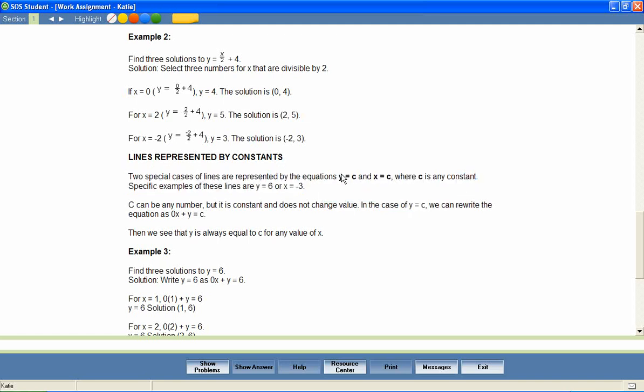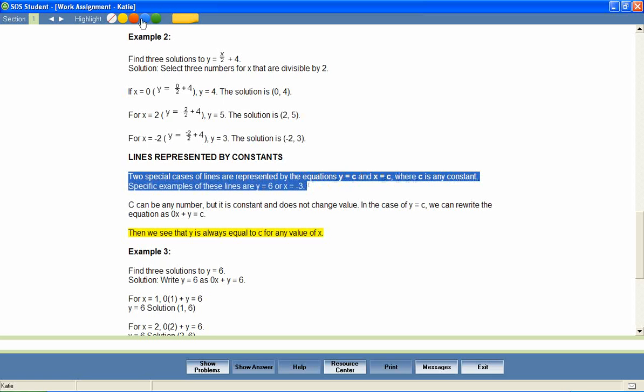An effective study skill that students should be encouraged to use is highlighting. Just as one would highlight portions of text in a traditional textbook, students can highlight text in their Switched On Schoolhouse lessons. Simply select a portion of text and select a highlighter color from the choices at the top of the page.